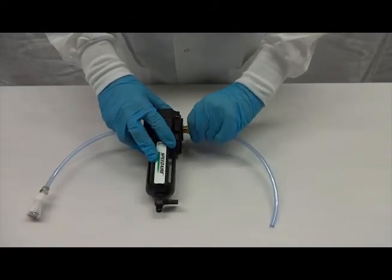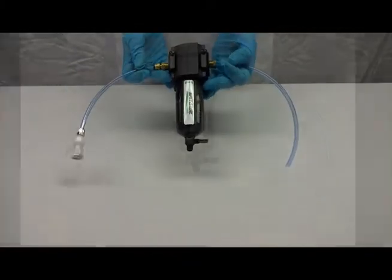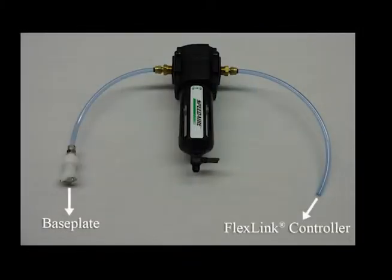Place the water trap at a position lower than the flex-link unit. Check the water trap prior to each experiment to see if water is accumulating. Empty the water trap before it is more than half full.